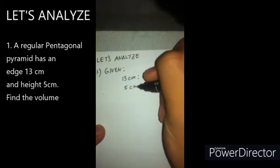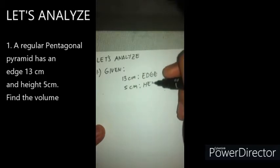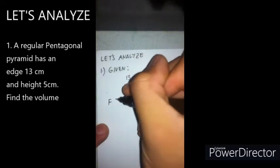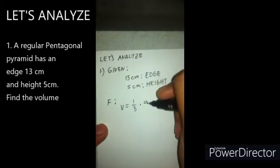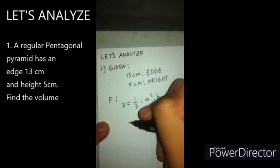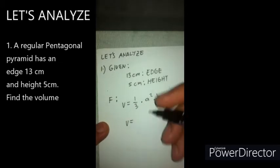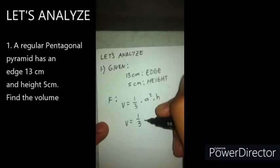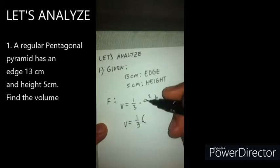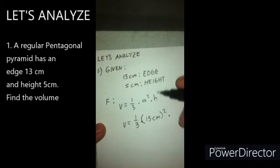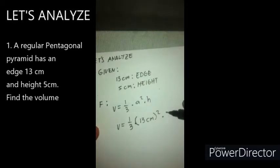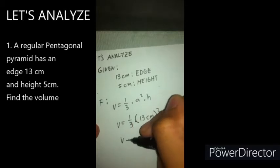And 5 cm for the height. The formula that we're going to use is V equals one third times A squared times height. So V, which stands for the volume — one third times A squared, which is the edge, so 13 cm squared, times the height which is 5 cm.